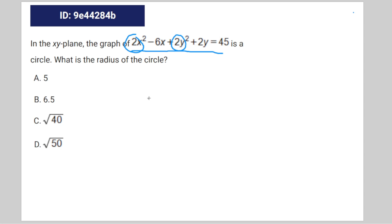So that's going to be x squared minus 3x, should probably write a little smaller, x squared minus 3x plus y squared plus y is equal to 45 divided by 2.